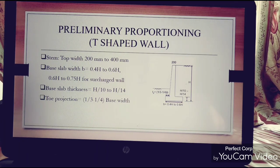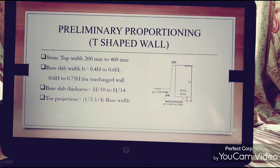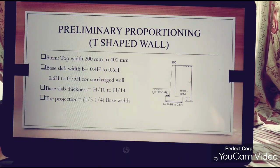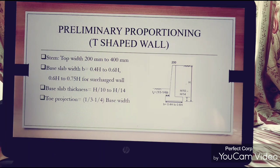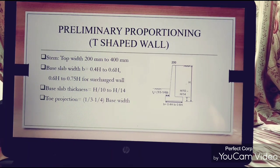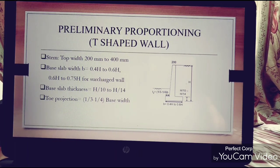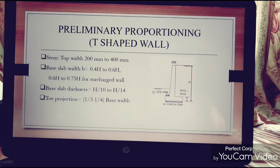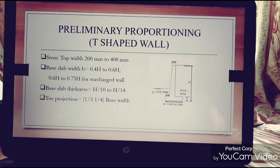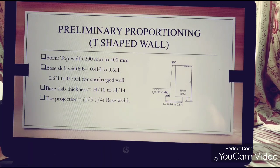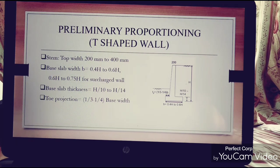0.4H to 0.6H for the base slab, where H is the height of the stem. The base slab for unsurcharged wall is 0.6H to 0.7H for the surcharged height.